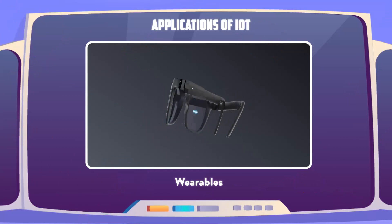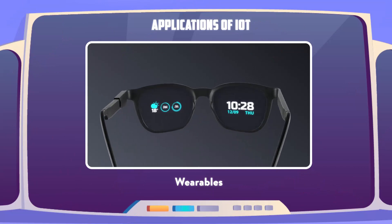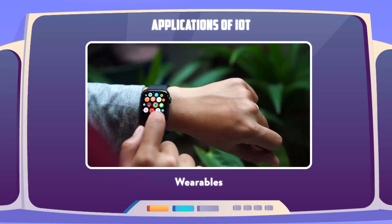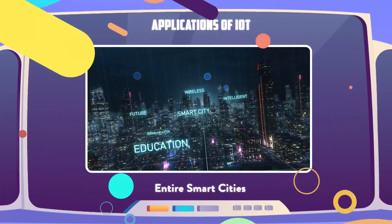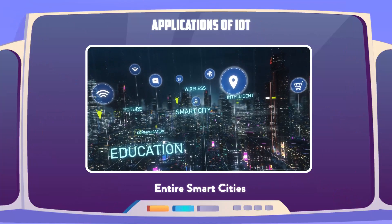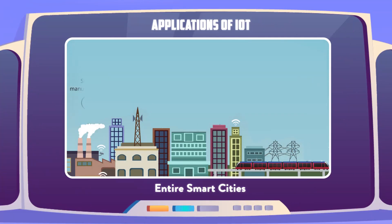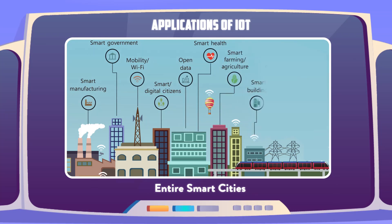Fourth application is wearables — devices that have sensors embedded in them and can be worn. There are a lot of IoT devices one can wear, such as smart spectacles, smart watches and many others, broadly covering fitness and health related data. Fifth and last are entire Smart Cities, another application of IoT technology, which includes automated transport, energy management, environmental monitoring, and smart bins that can alert municipal services when bins need to be emptied.